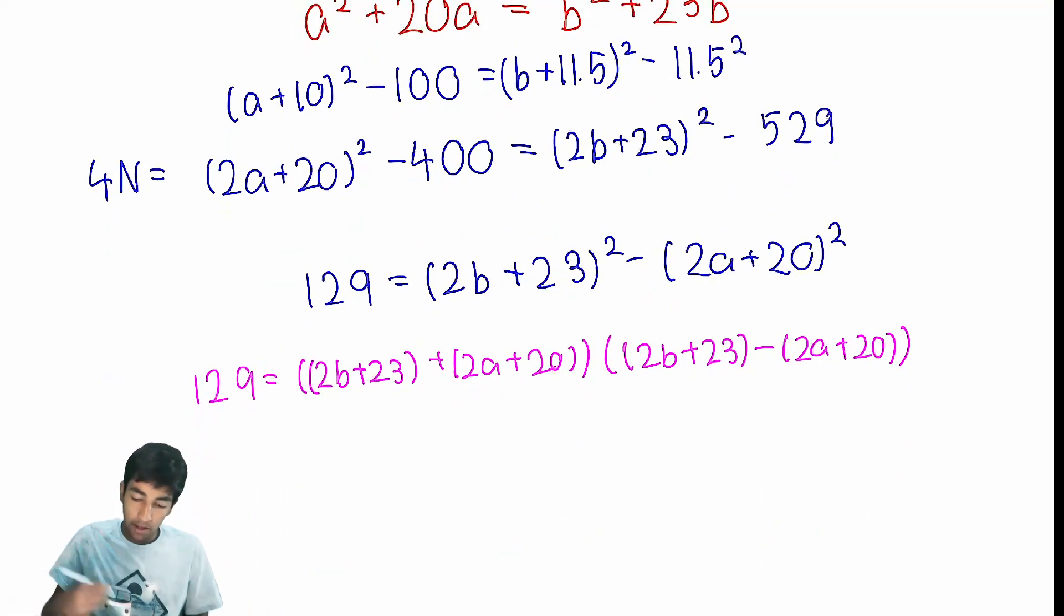And keep in mind that because A and B are positive, this thing is always more than this thing. So our possibilities, we only have 2 of them, just 2 to check, 129, 1, 43, and 3. So let's try the second one first. If this is 43, and this is 3, take a look.